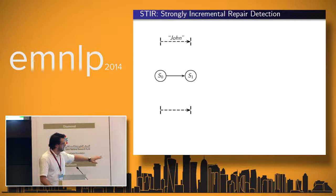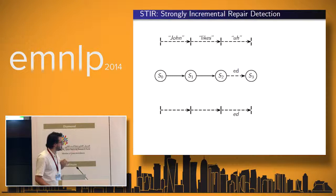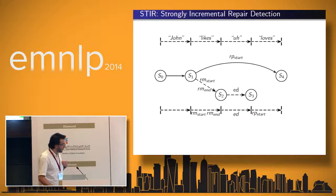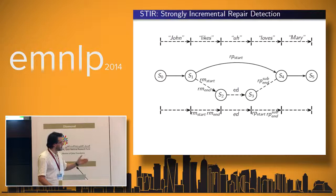Schematically, the repair detection works like this: the input word is processed word by word. For 'John', we have no reason to believe this is a repair. For 'likes', still no reason. We know 'or' is an edit term and should detect it immediately. Then 'loves' — that's where the repair detection principle kicks in. We know there's a repair there, so the output tag 'repair start' can be output and we search back for the start of the reparandum in a backward search process.